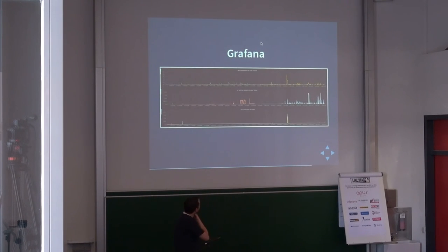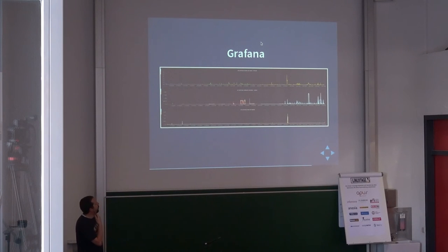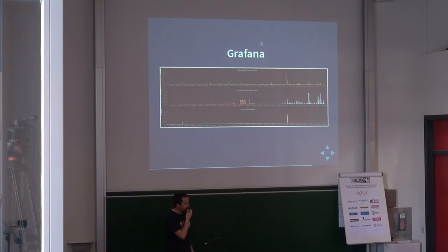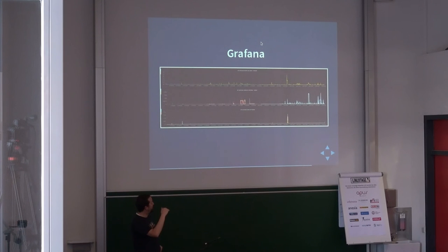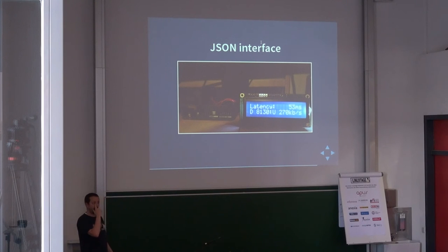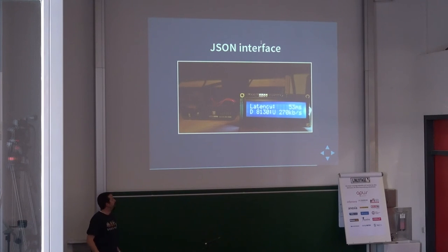One of the web interfaces shipped straight with Performance Co-Pilot is Grafana. You tell it which metrics and it uses Grafana to show you graphs of how the metrics behave over time. There's even a blinking lights backend — you specify the metric and the threshold values, and if it surpasses the value, you can make lights blink. A JSON interface is also exported, so it's quite simple to fetch performance data on embedded systems.